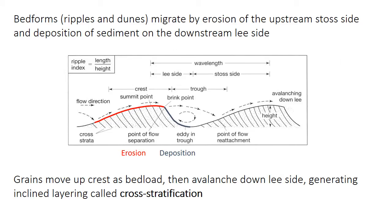Both ripples and dunes migrate in a similar fashion: they erode on the upstream or stoss side, and deposition occurs on the steeper downstream lee side. This pattern of sediment transport arises because of water flow and velocity changes as water interacts with the bed — occurring in the laminar sublayer for ripples and in the turbulent boundary layer for dunes. Sediment grains slide, roll, or bounce up the gentle stoss slope until they reach the top of the crest, labeled as the brink point, where they build up until the over-steepened lee face collapses and grains avalanche down into the trough.